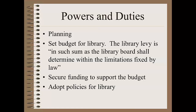A related duty is to secure the funding to support the budget. If the budget you set will require additional funding, the board should work to secure that — this is part of advocacy for the library. This may mean working with local government to raise whatever mill levy limitation may be in place, or making sure that the local government fulfills its legal obligation to levy the amount necessary to fund the budget. It may also mean fundraising. Another duty is to adopt policies for the library. In Kansas, library boards are policy-making boards, not just advisory boards. The library board actually sets policy on services, personnel, and anything else having to do with the library. The city doesn't do that — the board does.